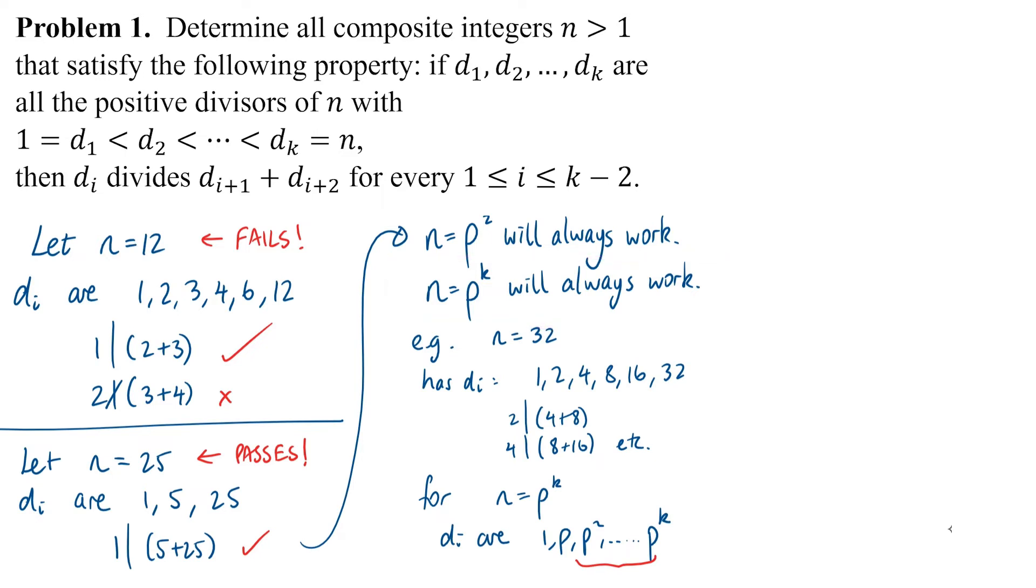But are there any other types of numbers that would also work? Let's try if we just had 2 prime factors, like 15 which is 3 times 5. Listing the divisors in order we have 1, 3, 5 and 15.